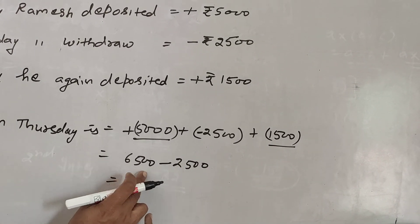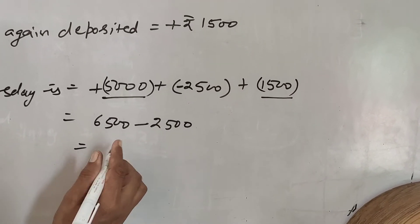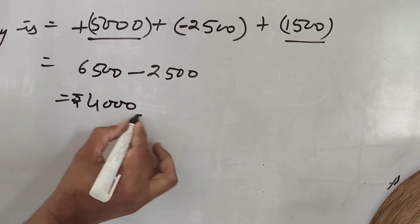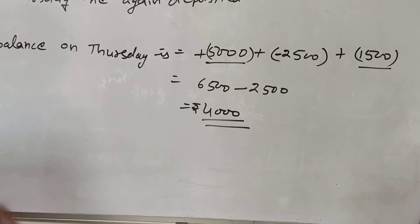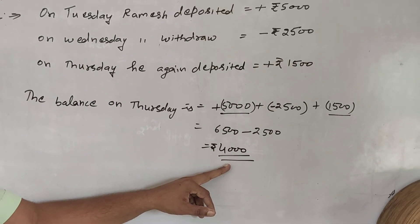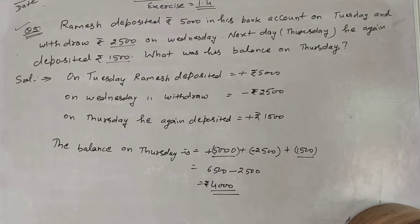So 6,500 minus 2,500 equals 4,000. So on Thursday, the balance is Rs. 4,000. Thank you.